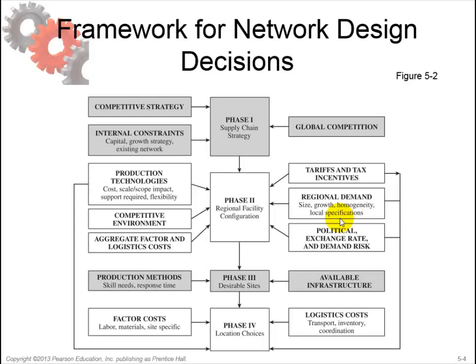After completing the capacitated plant location model, you proceed to phase 3: desirable sites. The objective of phase 3 is to select a set of desirable potential sites within each region where facilities are to be located. Sites should be selected based on infrastructure availability to support desired production technologies. Hard infrastructure requirements include supplier availability, transportation services, communications, utilities, and warehousing. Soft infrastructure requirements include the availability of a skilled workforce, workforce turnover, and community receptivity to business and your industry.